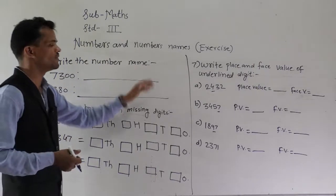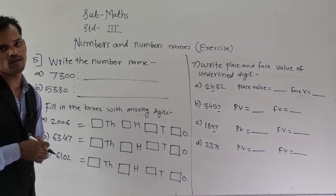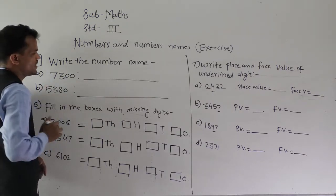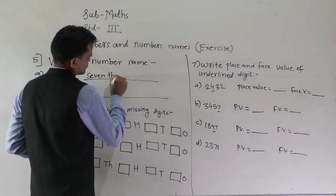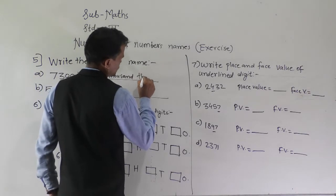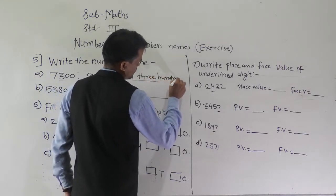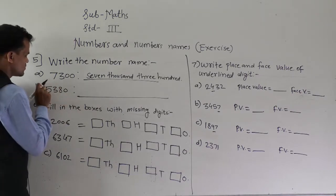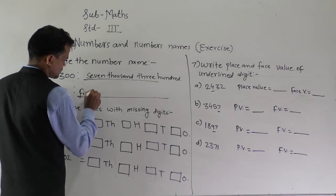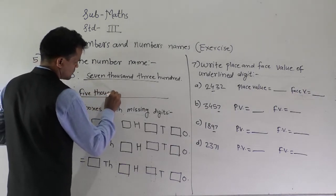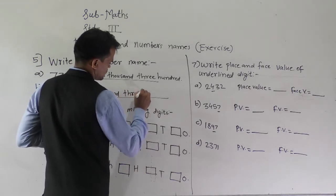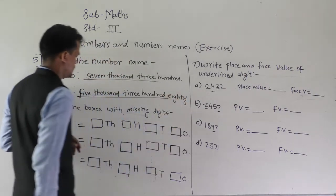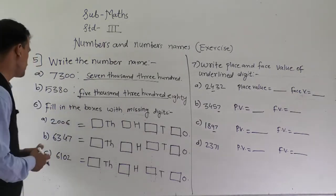Number 5: write the number name. Here a numeral is given and we have to write the number name. Read this number — this is a four-digit number, so it starts from the thousand place. 7300 — write here 7300. Then the next number, this is also a four-digit number, so you start from the thousand place: 5380.